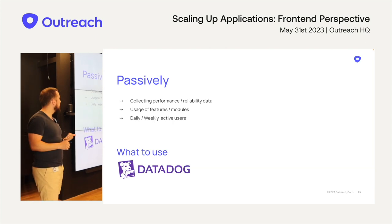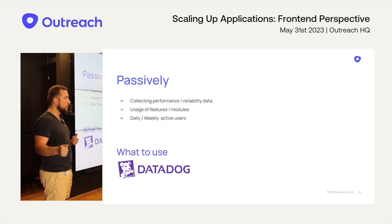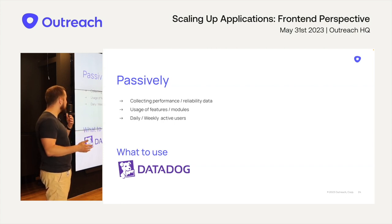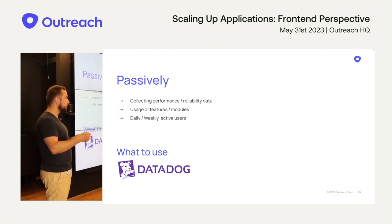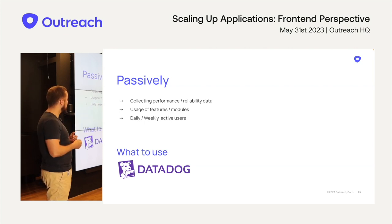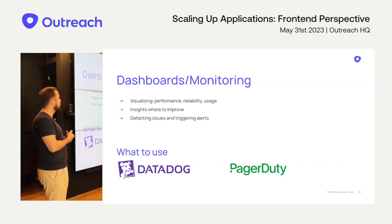We can also do it passively by collecting data directly from the application. You can measure time from when you start loading data until it's loaded, then how much time it takes to render data for the user, and even how much time from opening the page until the user can see the first input. This gives objective data so we really know how fast the application is and where we have room to improve. We can also track how users click on specific buttons, which filters they apply most often, and daily/weekly activity.